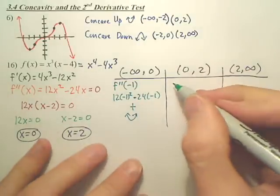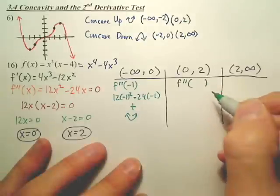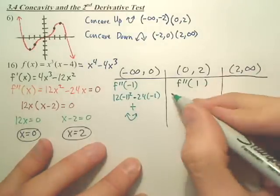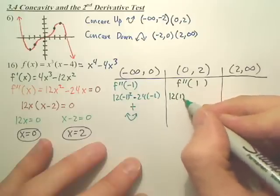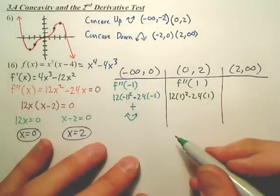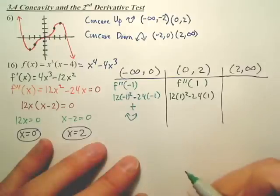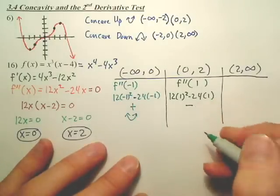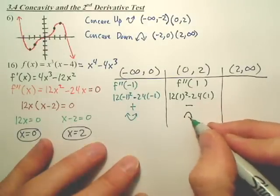Okay, next one. What's a good value to plug in? 1? We've got 12 minus 24. Is that negative? So, what's that tell us? He's sad.